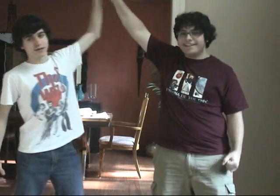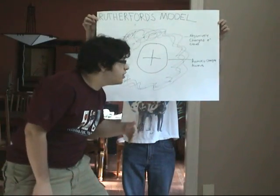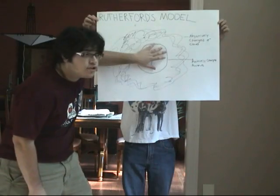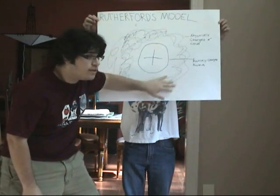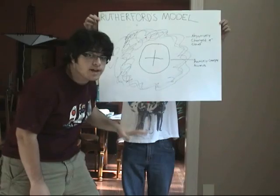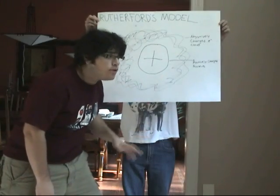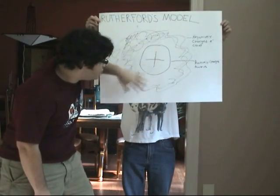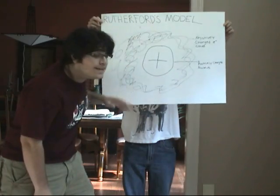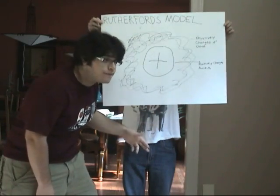And he came up with a model of his own — the Rutherford model. The Rutherford model shows that this positively charged nucleus is surrounded by a negatively charged cloud of electrons. In the experiment, the alpha particles that made it through did not touch the nucleus and went through the cloud. The ones that did hit the nucleus bounced off.